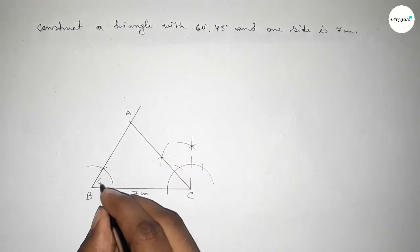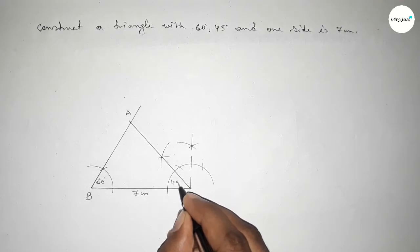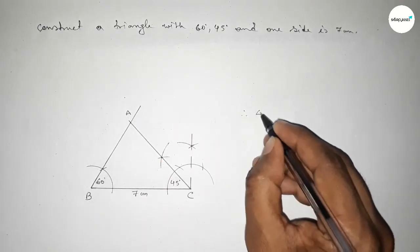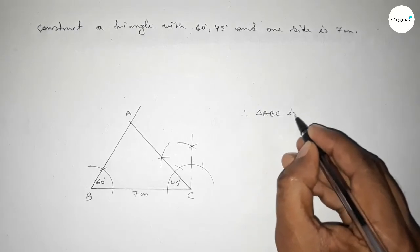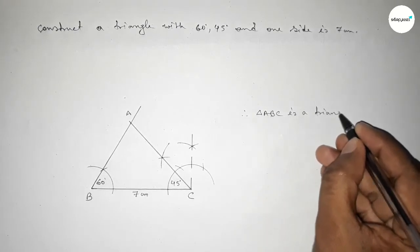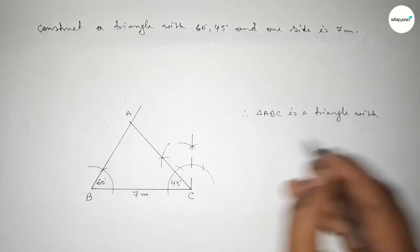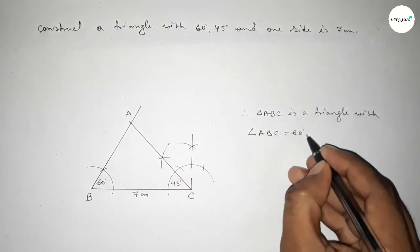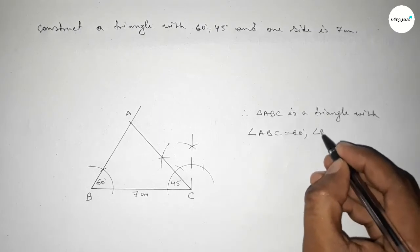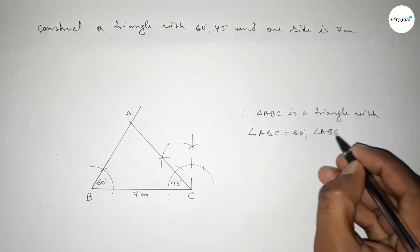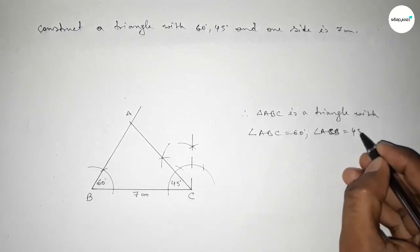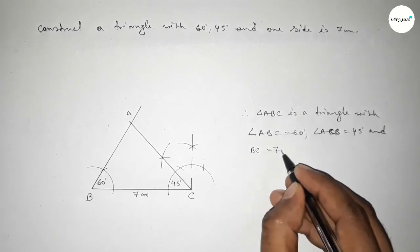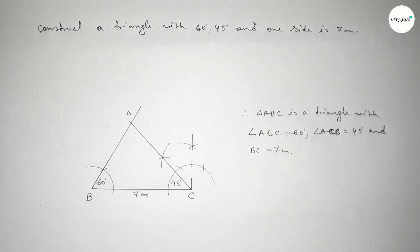So this side BC equals 7 centimeters, angle ABC equals 60 degrees, and angle ACB equals 45 degrees. Therefore triangle ABC is a triangle constructed with two given angles and one given side.